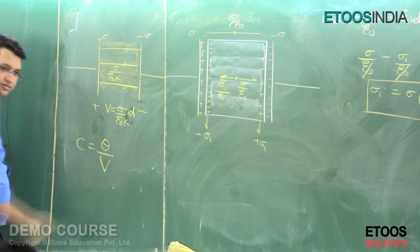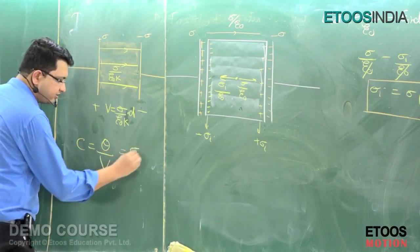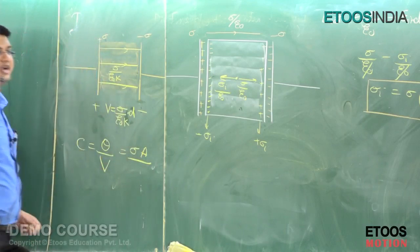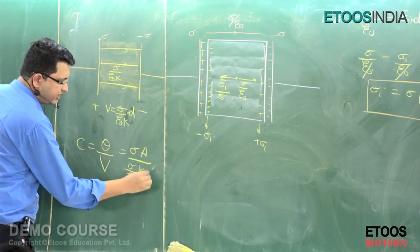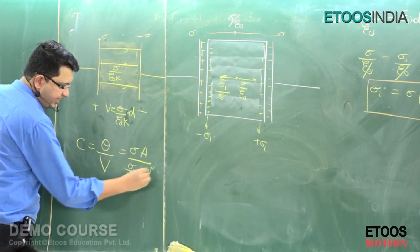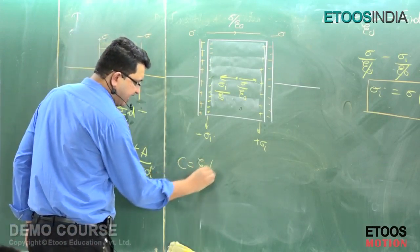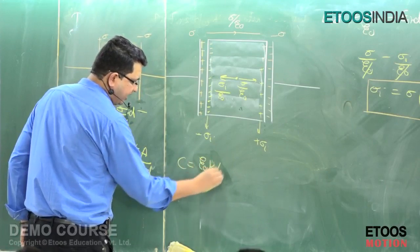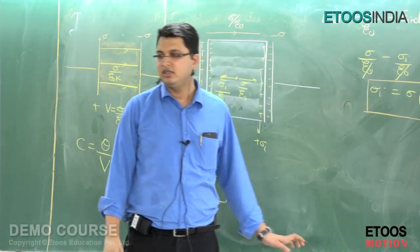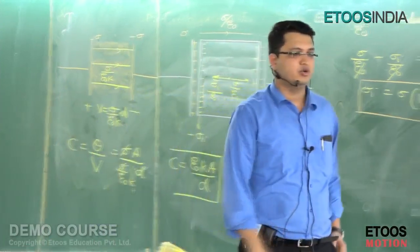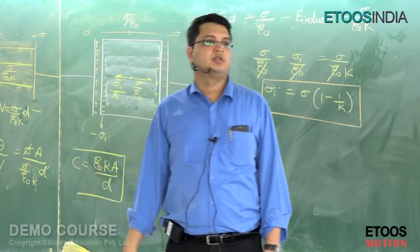Capacitance C = Q/V. Q is nothing but σA. And V is equal to (σ/ε₀K) multiplied by D. So C equals σA divided by (σ/ε₀K × D), which simplifies to C = ε₀KA/D. The dielectric increases the capacitance by a factor of K.